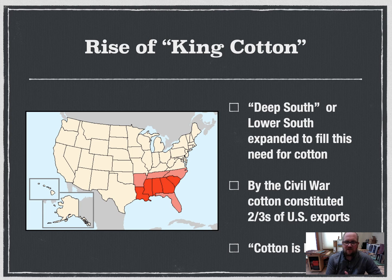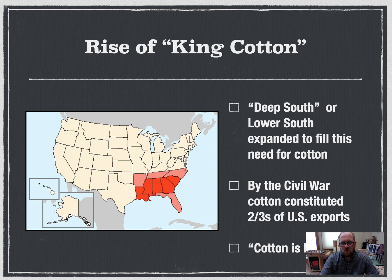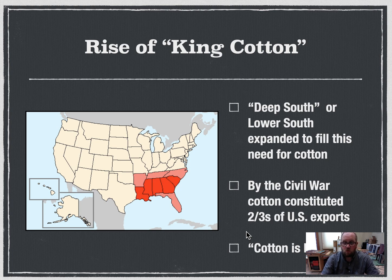As the rise of King Cotton happened, the South expanded well beyond Virginia, South Carolina, and North Carolina into the Deep South. And the reason why cotton is king — by the Civil War, two-thirds of all U.S. exports, not just Southern exports, two-thirds of all U.S. exports was cotton. You can see how large an importance this had on international trade.